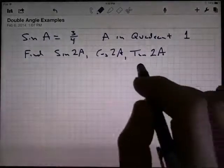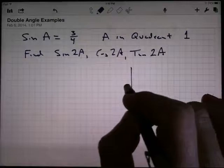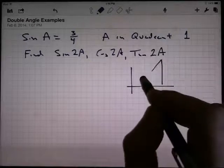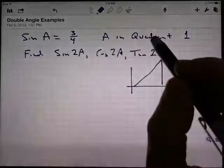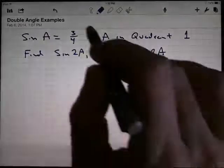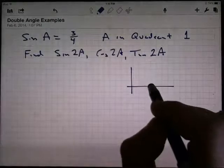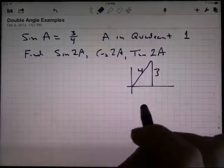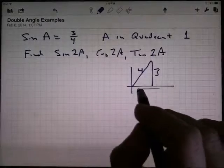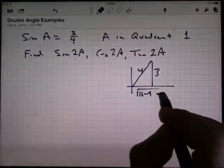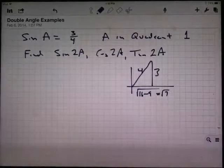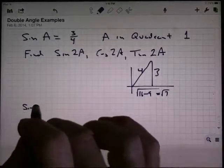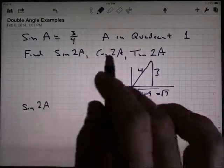So first thing I'm going to do is just draw a picture here, because that gets me a lot of information about A. The sine of A is 3 divided by 4. I'm going to redraw that a little bit because it's probably something a little more like this. 3 and 4. I can use Pythagoras to get the other side here. The square root of 16 minus 9, which would be the square root of 7. So now that I have all three sides, I've got any trig function of A that I want.